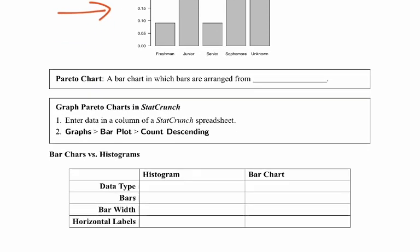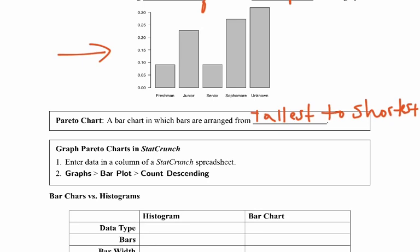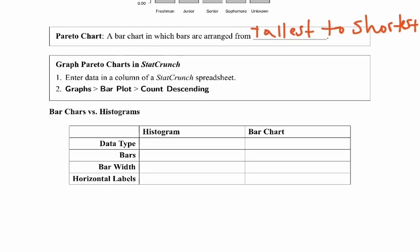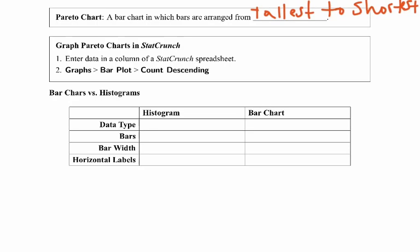A Pareto chart is a special type of bar chart in which the bars are arranged from tallest to shortest. So it's still a bar chart. It just means we have it arranged the graph from tallest, the bars from tallest to shortest. In order to do that in StatCrunch, you're going to go to Graph, Bar Plot, and you're going to choose the option for Count Descending.